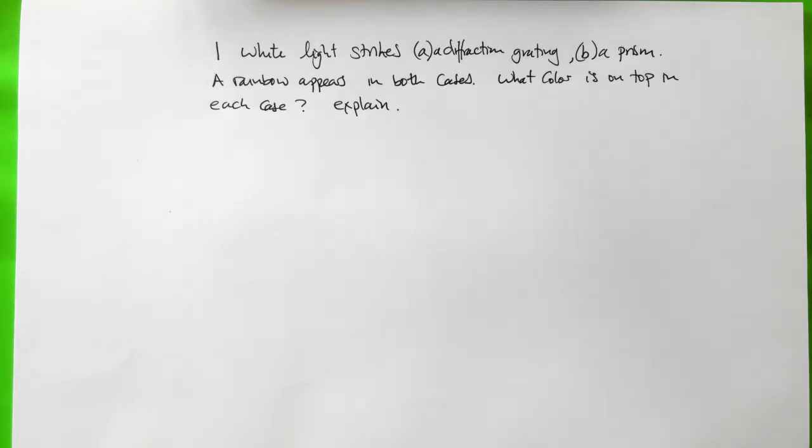Now we're going to look at question one on the study session spectroscopy and atoms. Question one says white light strikes a diffraction grating or prism and a rainbow appears in both cases. What color is on the top in each case and can you explain?